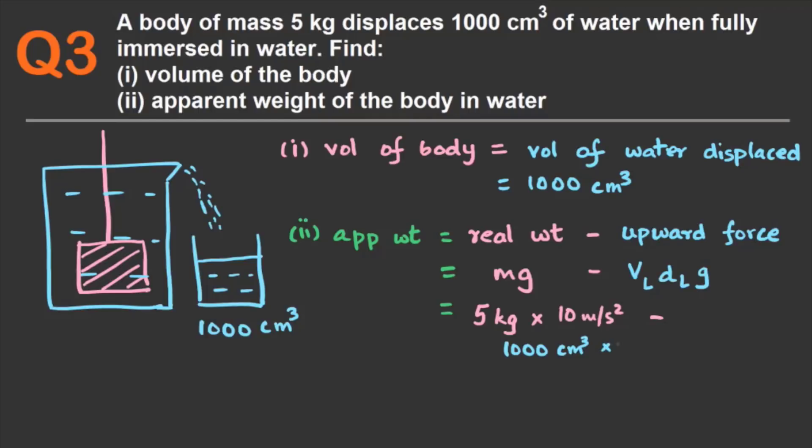DL is the density of water. Since it's not given in the question, we are going to take the known value of 1 gram per centimeter cube. And g is 10 meters per second square. The initial part works out to be thousand grams or 1 kg. So the apparent weight is 50 Newton minus 10 Newton, which is 40 Newton or 4 kgf.